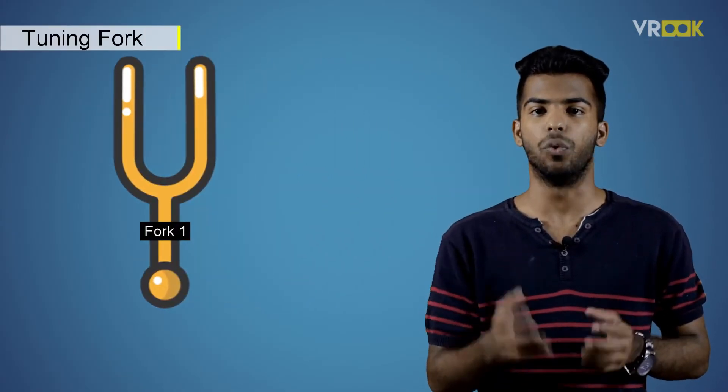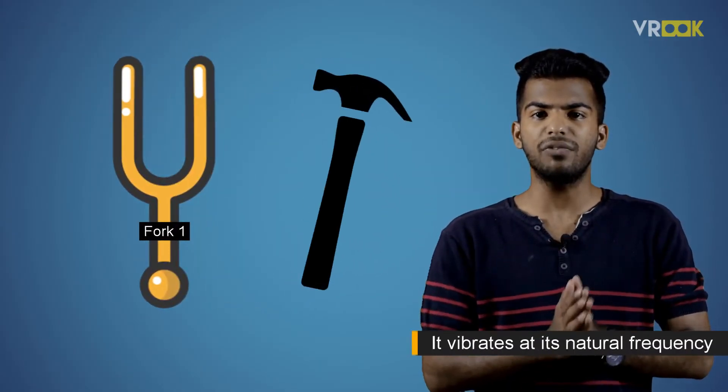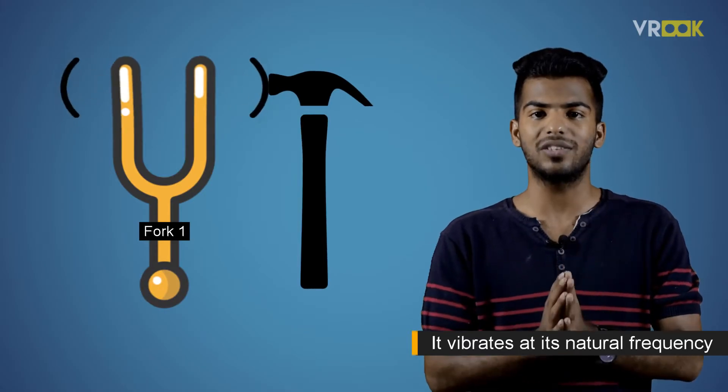Let's consider the classic example of a tuning fork. When we strike it with a hammer, the fork starts to vibrate.